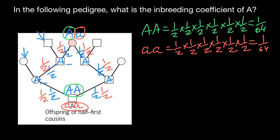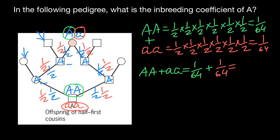This is not the end of our calculations. The question is to find the coefficient of inbreeding, so we have to add these two probabilities — that he is going to be identical at locus A for either allele, both inherited from the common ancestor. The probability is one over 64 plus one over 64, which equals two over 64, or one over 32.